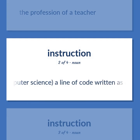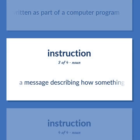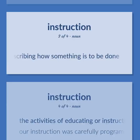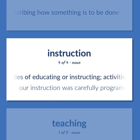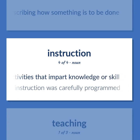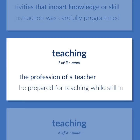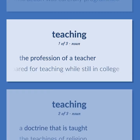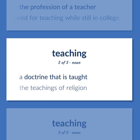Computer science: a line of code written as part of a computer program. A message describing how something is to be done. The activities of educating or instructing; activities that impart knowledge or skill. Our instruction was carefully programmed. The profession of a teacher. He prepared for teaching while still in college. A doctrine that is taught. The teachings of religion.